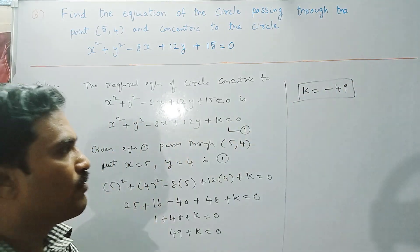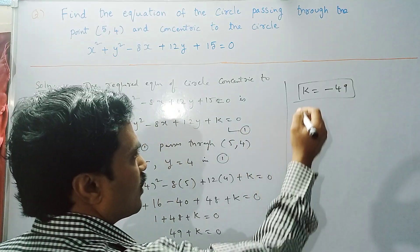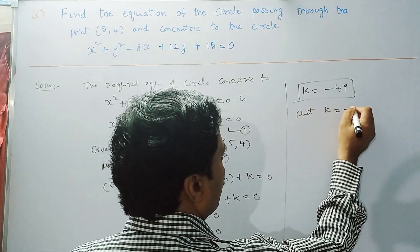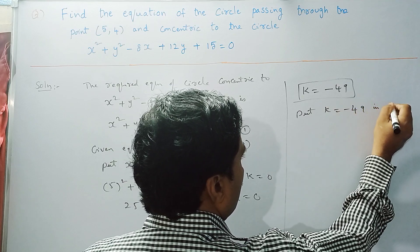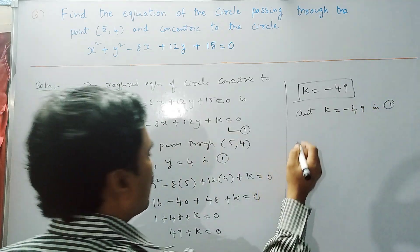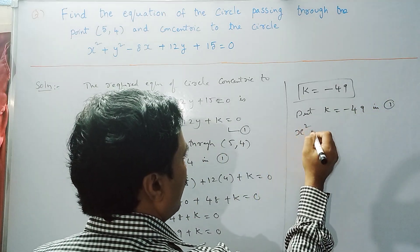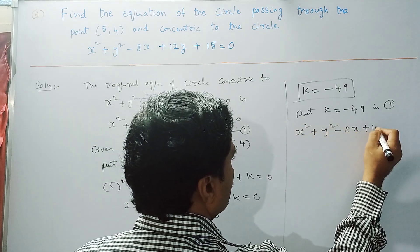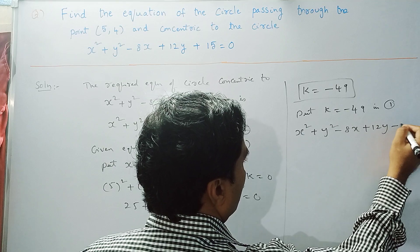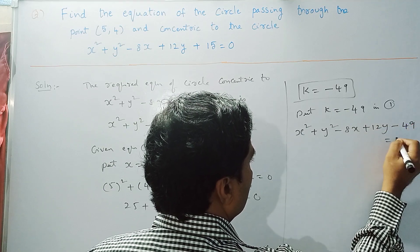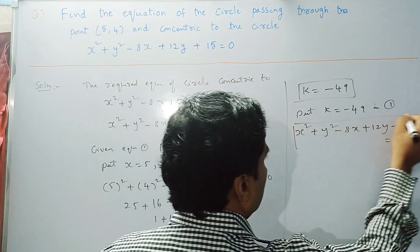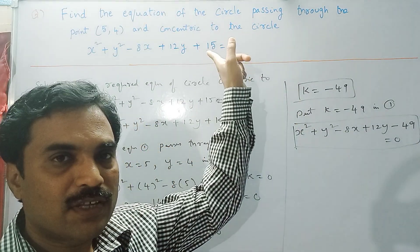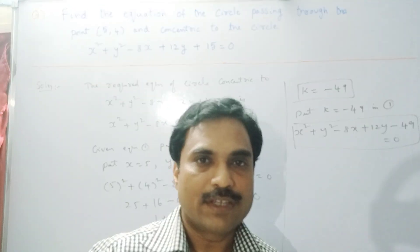Put k = −49 in equation number 1. The required equation is x² + y² − 8x + 12y − 49 = 0. This is the required equation of the circle which is concentric to the given circle and passes through the point (5, 4).